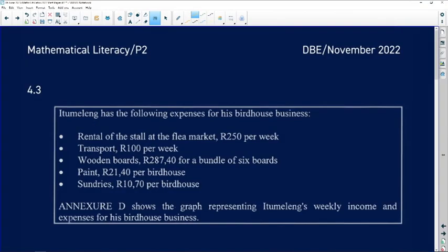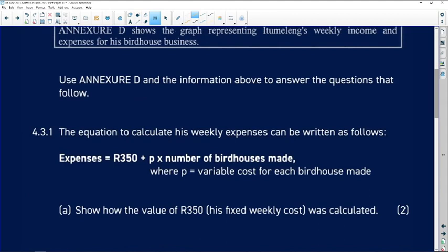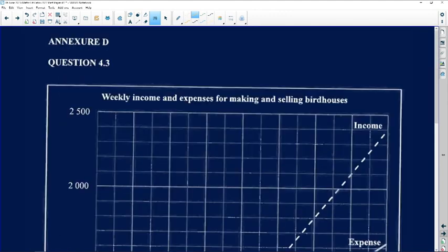Let's look at 4.3. Itumeleng has the following expenses for the birdhouse business: rental of the stall at the flea market R250 per week. We've got all the information and ANNEXURE D to work with, so we need to quickly go and take a look at ANNEXURE D.